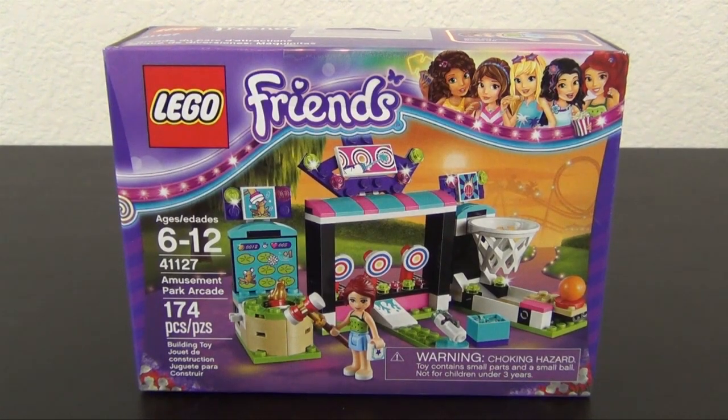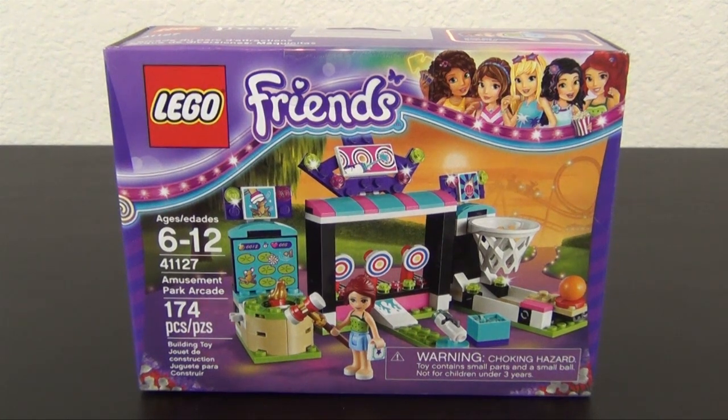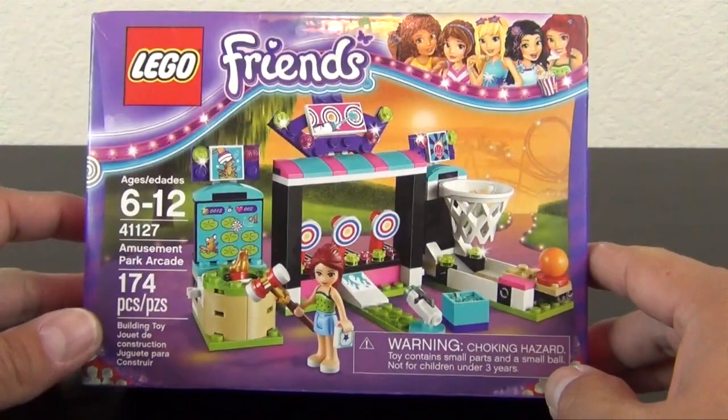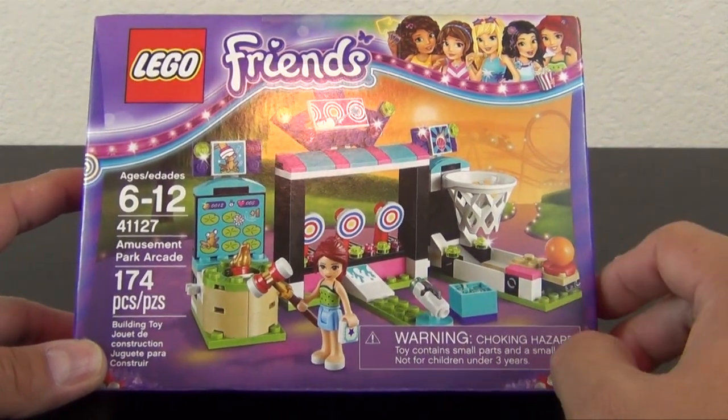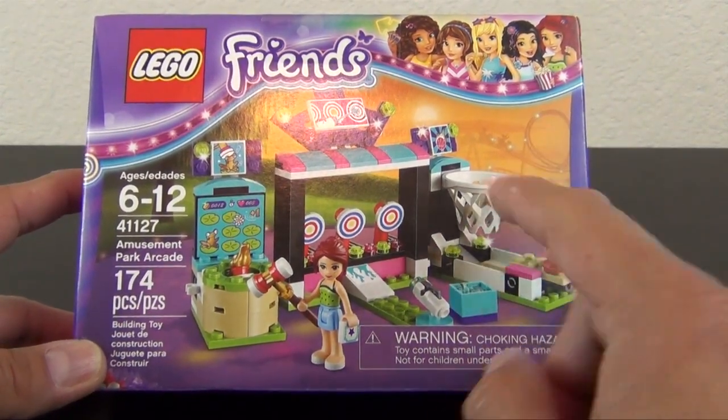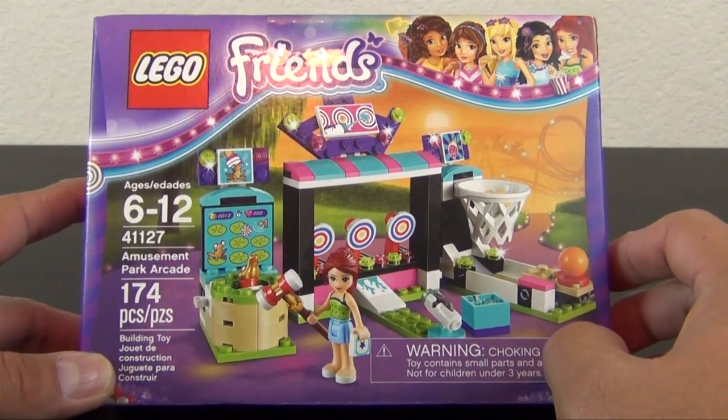Hey everyone, welcome back to The Hidden Brick, where today we're going to build the Lego Friends Amusement Park Arcade, set number 41127, 174 pieces. We've got this cool little game area where you've got basketball, a little target skill game, and then a little whack-a-mole type game.